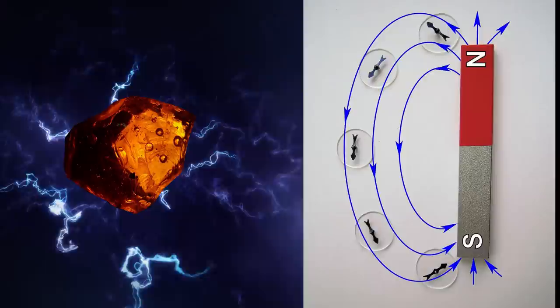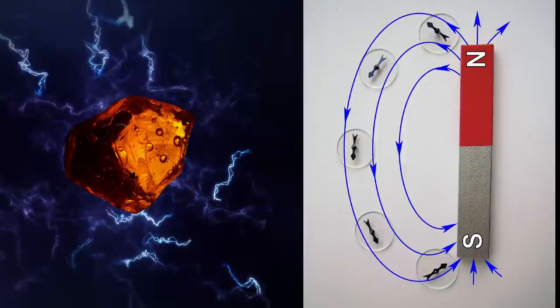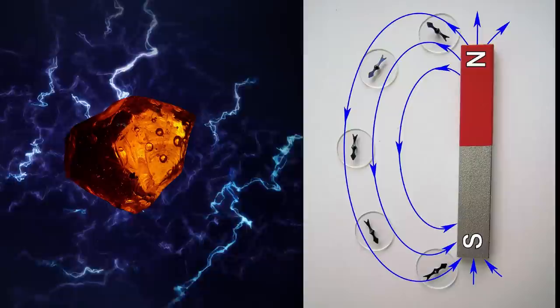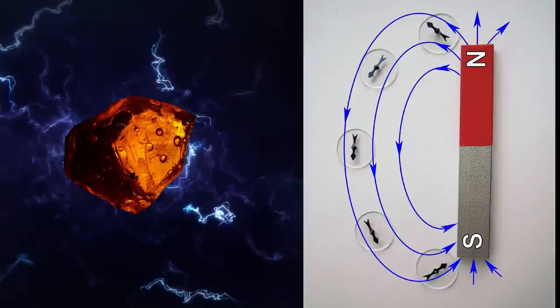Gilbert studied the difference between these two forces. Magnetism required no stimulus of friction compared to electricity. Magnets only attract certain types of material, whereas electrified bodies attract everything.